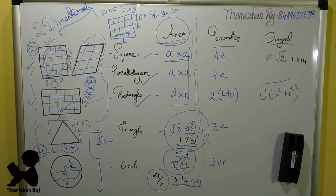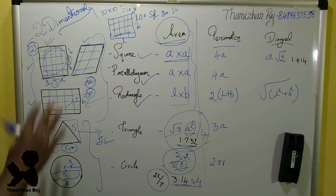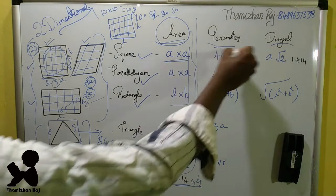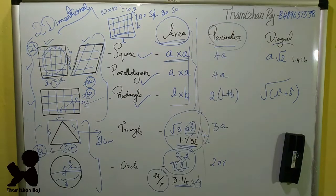R squared — this is the formula for the area of a circle using R².